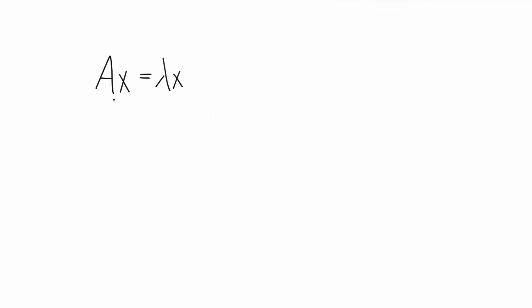Really all you need to know to get started is this one expression: A x equals lambda x. In this case we have A here, which is a matrix, actually an n by n matrix. And x is just a vector, and lambda is a scalar.